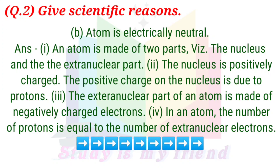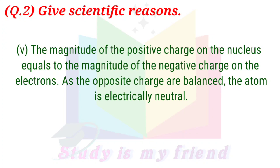Question 2B: Atom is electrically neutral. Answer: An atom is made of two parts — the nucleus and the extra-nuclear part. The nucleus is positively charged due to protons. The extra-nuclear part is made of negatively charged electrons. In an atom, the number of protons equals the number of extra-nuclear electrons. The magnitude of the positive charge on the nucleus equals the magnitude of the negative charge on the electrons. As the opposite charges are balanced, the atom is electrically neutral.